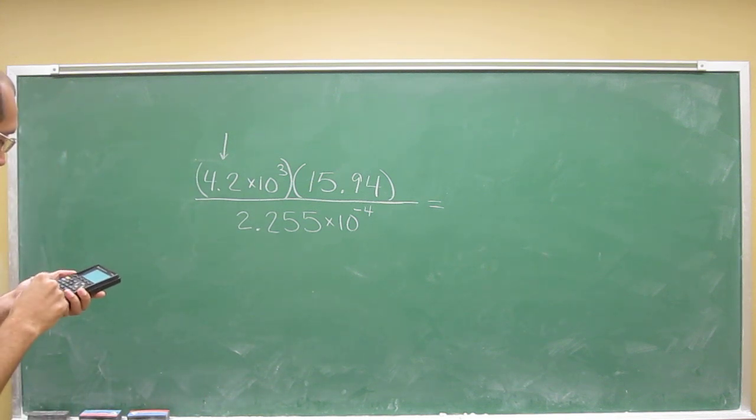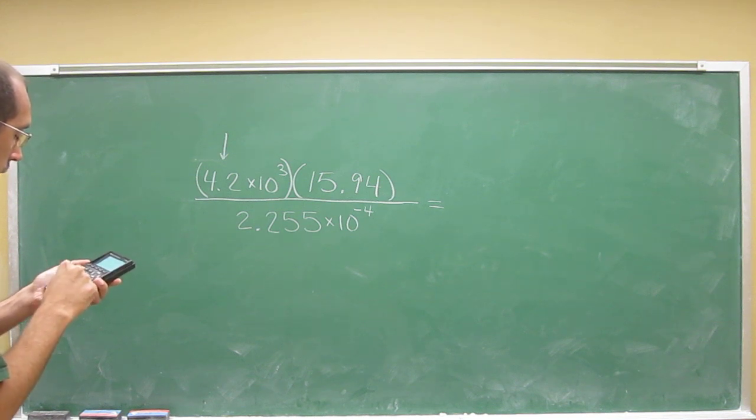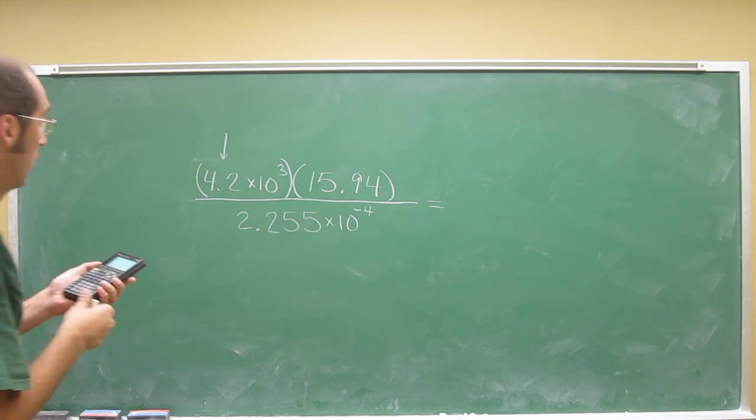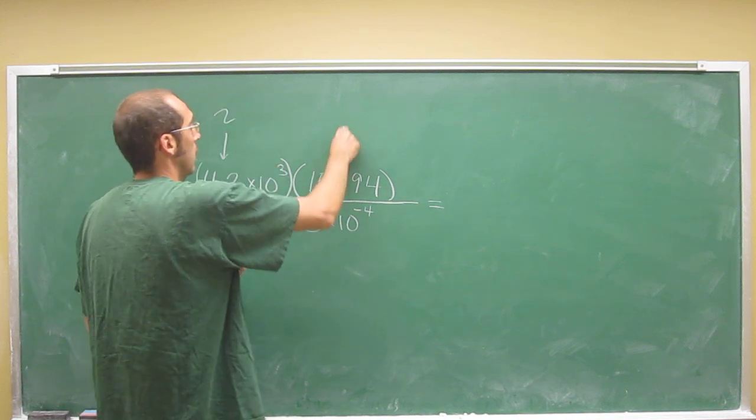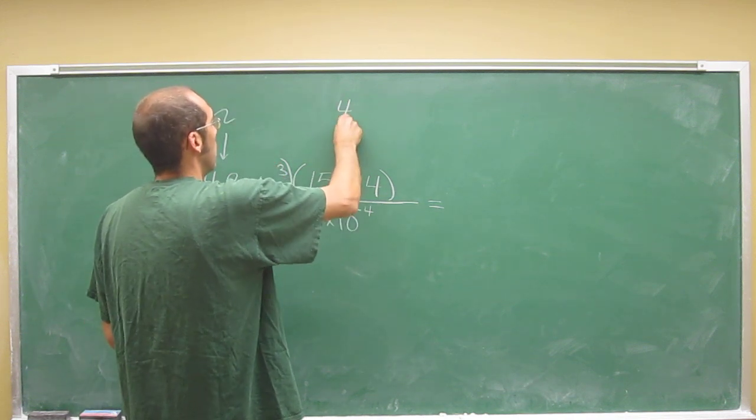So 4.2e3 times 15.94. So how many does this have? This has 2, this number here has 4, right?